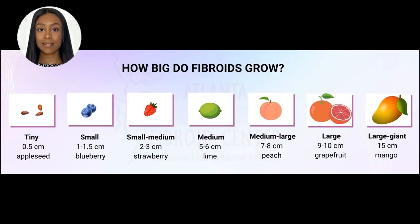As you can see, the chart breaks down the size of fibroids into different categories, from less than 1mm to over 10cm. With this chart, you can better understand the severity of your fibroids and make informed decisions about your treatment options.